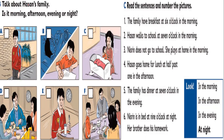So now this is our question. We have to number these pictures based on the sentences. For number one, we say the family have breakfast at six o'clock in the morning. So look here — we have a family having their breakfast at six o'clock in the morning.